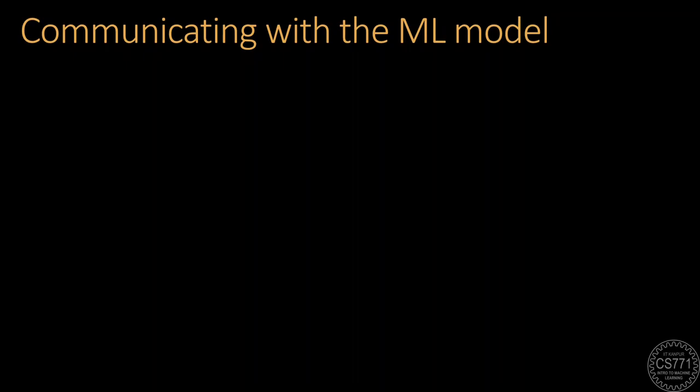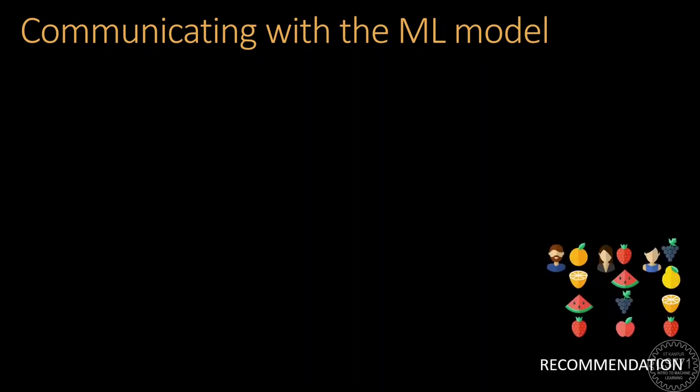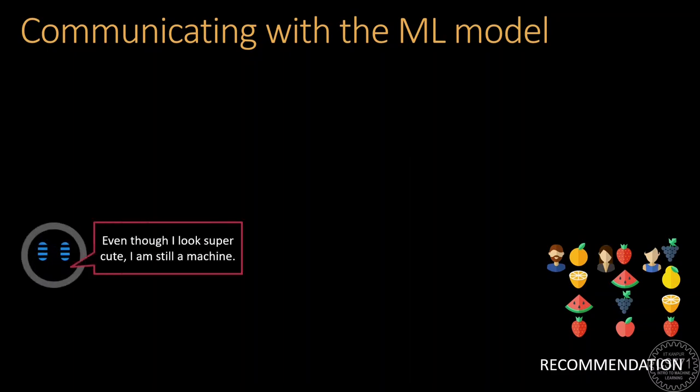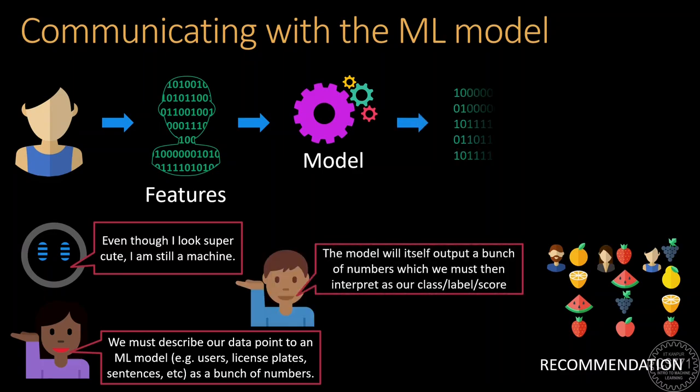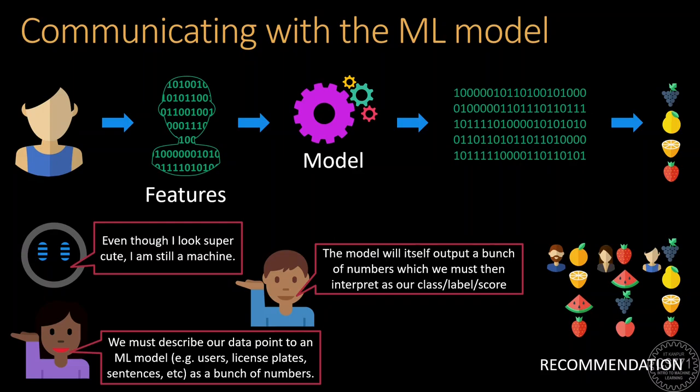Machine learning models, as we have seen, are essentially pieces of code and hence can only understand digital or numerical values. Thus, we need to describe our data point to a machine learning model in the form of numerical values known as features. Similarly, the predictions of the model are also bound to be in the form of numbers, which we need to then interpret to get our actual output. So, before we see examples of how to do this description and interpretation, let us quickly refresh what are vectors and matrices.